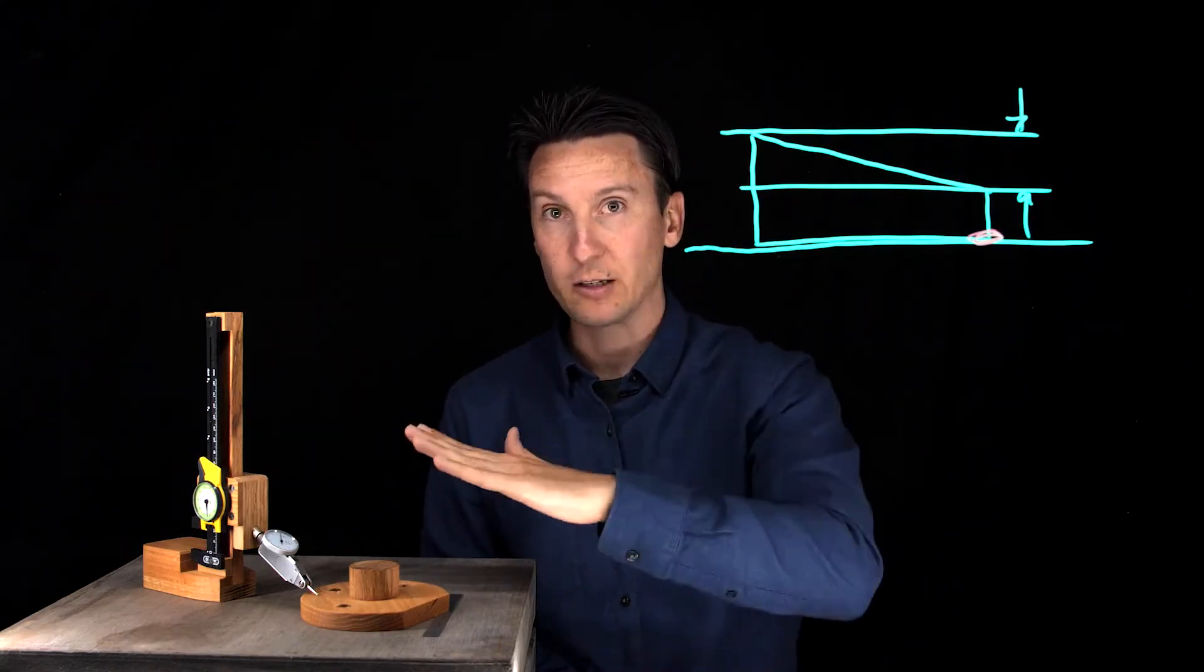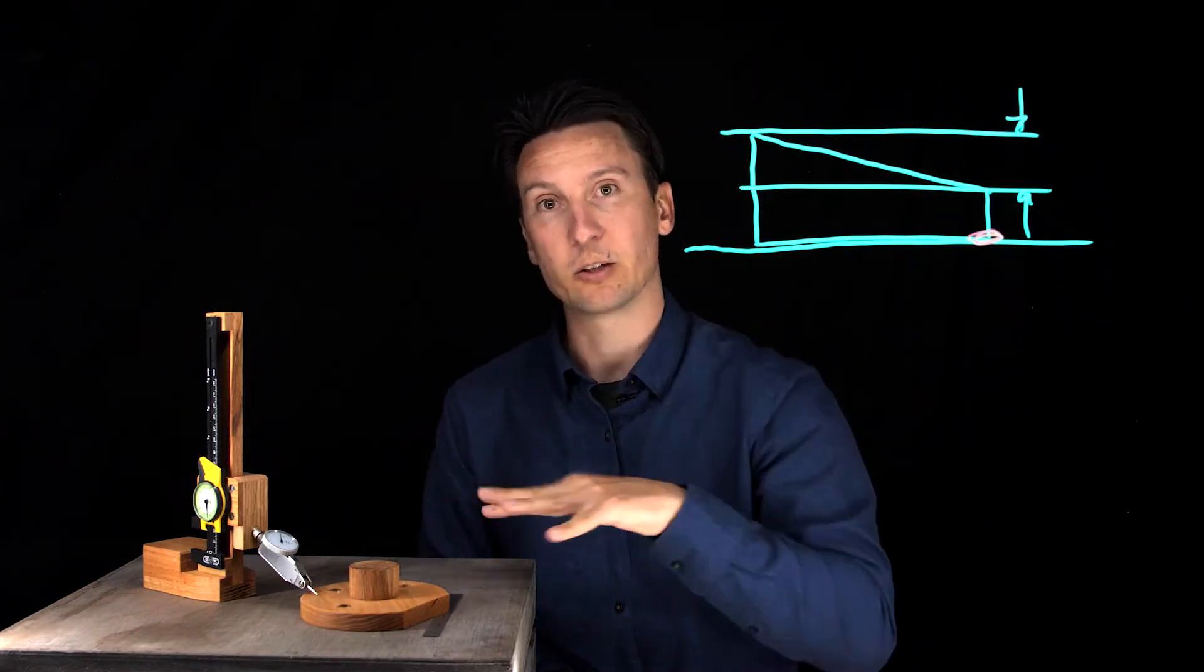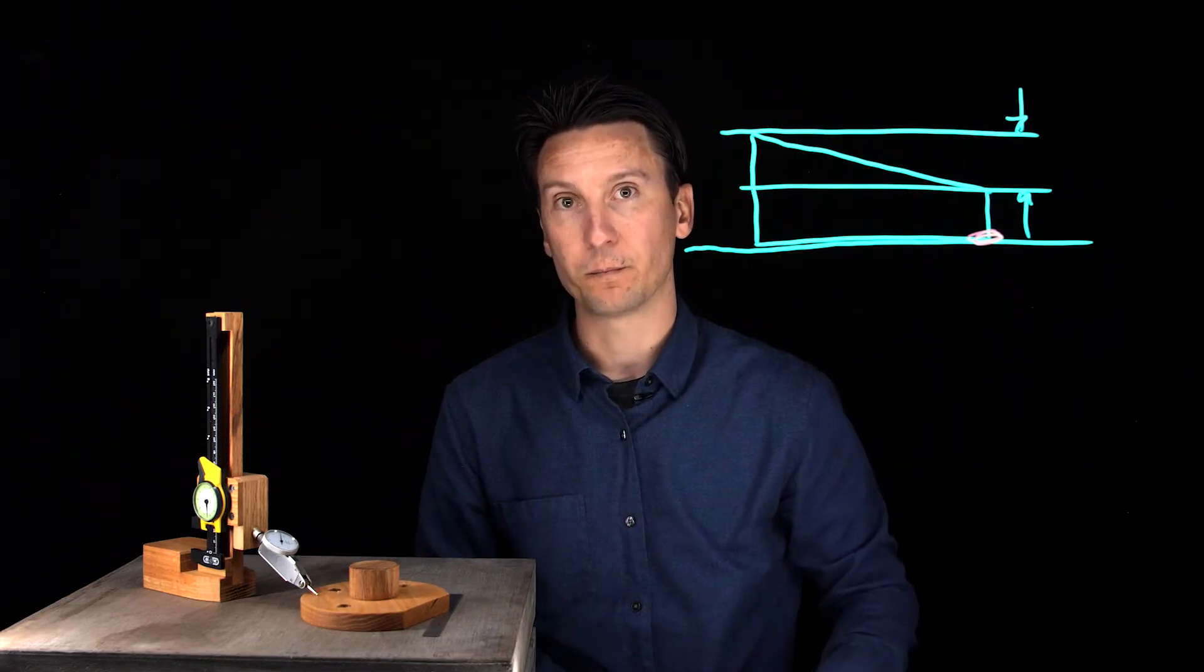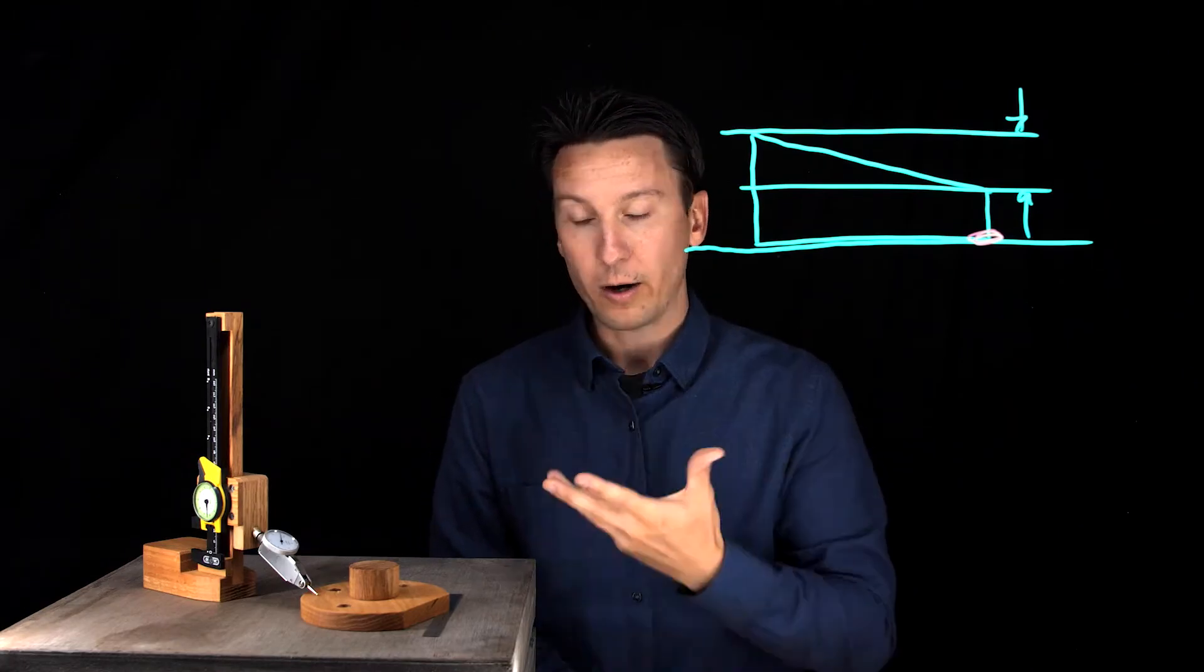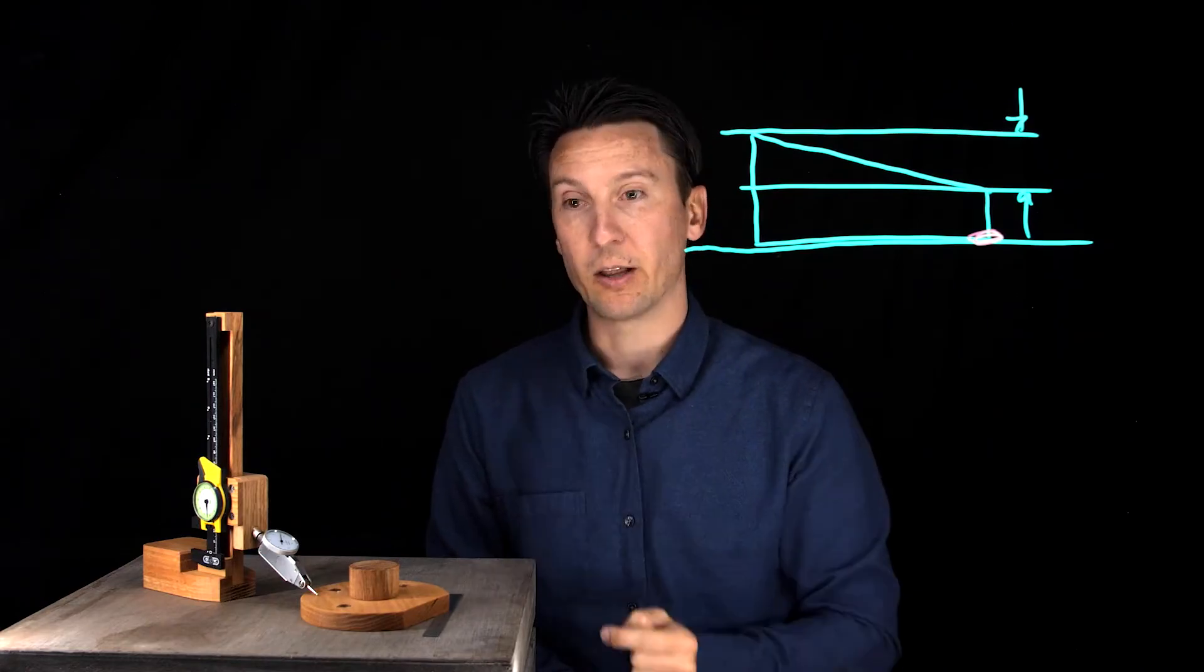Now not only do you have to best fit left to right, you also need to shim front to back too because you have a three-dimensional variation here. A very accurate way to measure flatness. It's time consuming with all the dial indicator and the shimming in there.